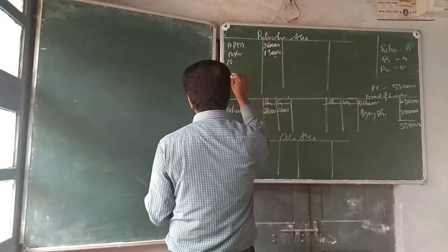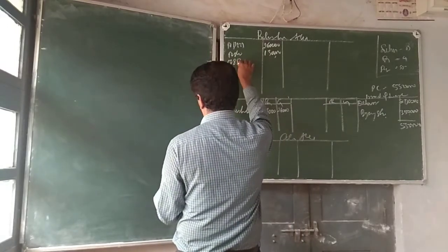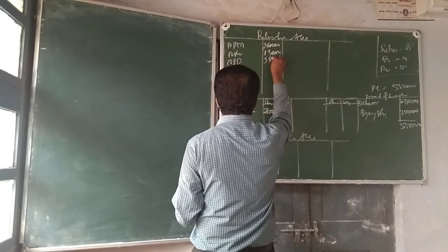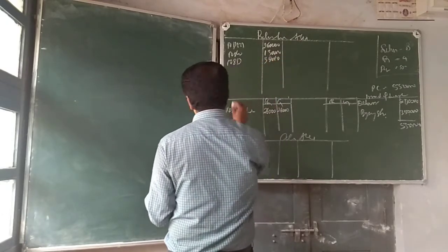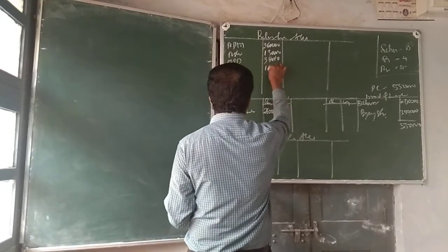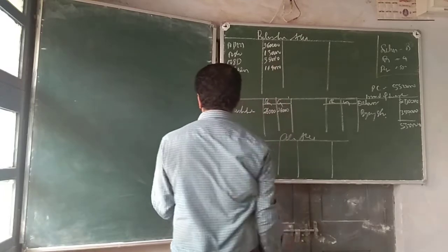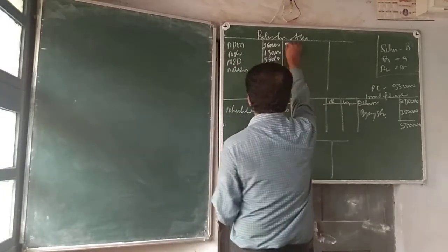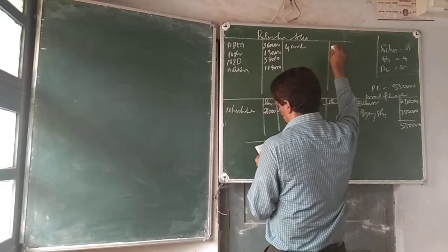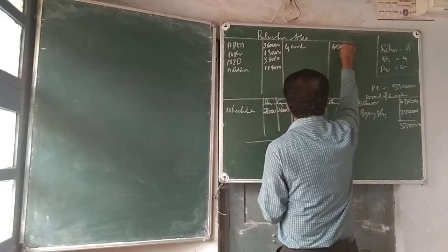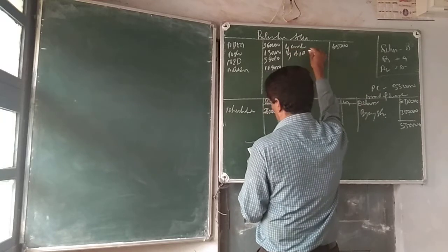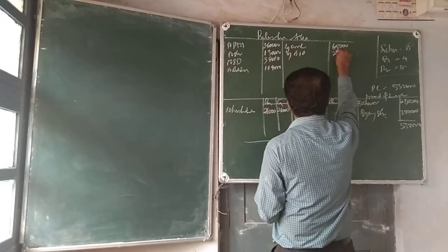To sundry debtors: 38,000. Then buildings: 1,69,000. By creditors: 65,000. By bills payable: 22,000.